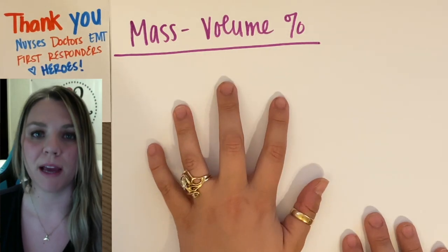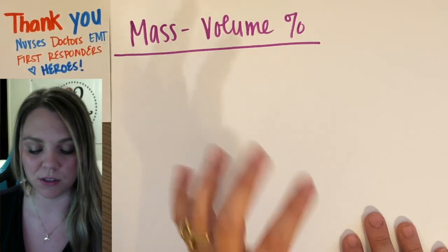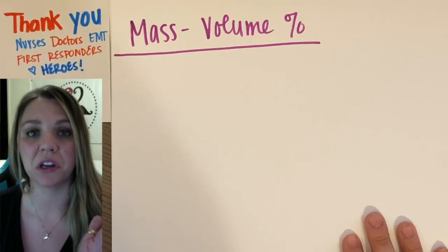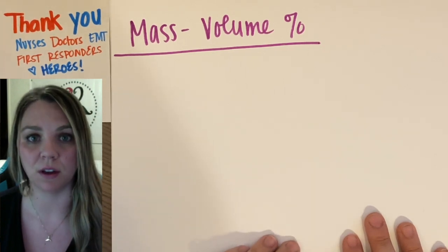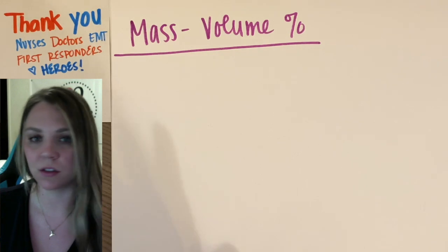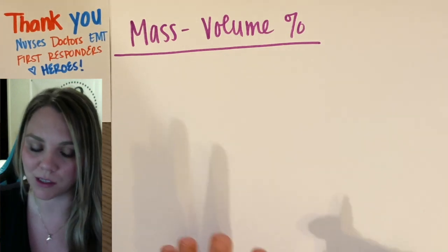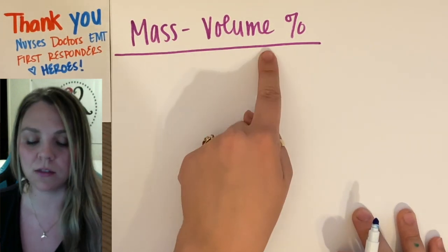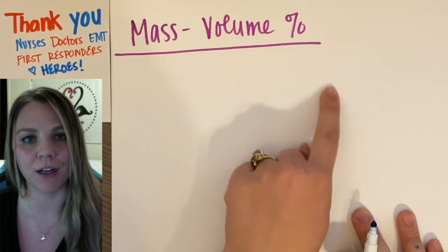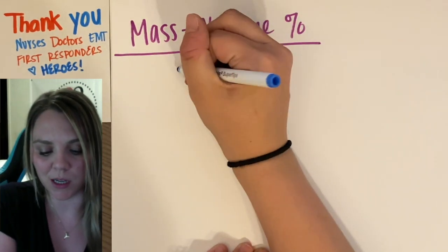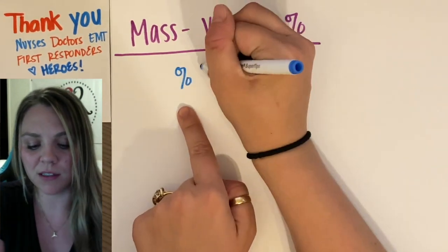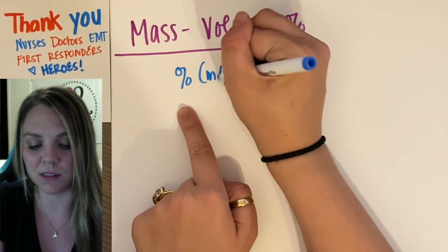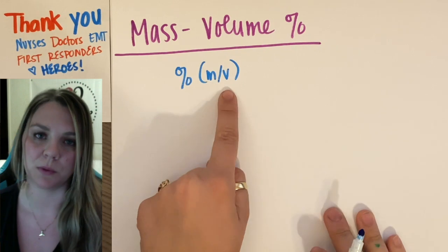So mass volume percent is just another way to look at concentrations of solutions. It's actually really easy and very convenient. And the shorthand way that we do this, because we don't want to write out the actual words, you have percent, and then in parentheses, you put m slash v, mass per volume.